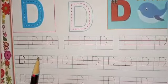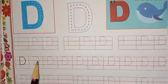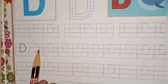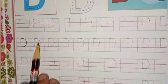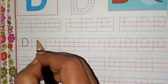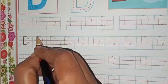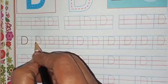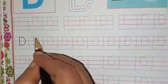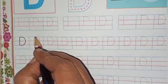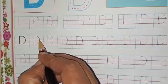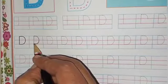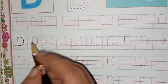Let us start to write. One, two, three, four. Four lines are here. First, draw a standing line from the first line to the third line. Then, a curve from the first line to the third line. We get capital letter D.